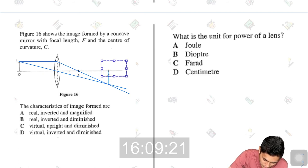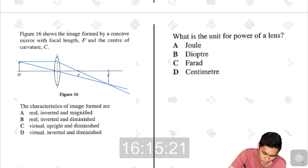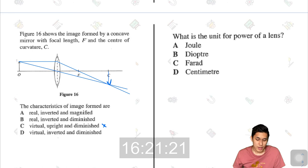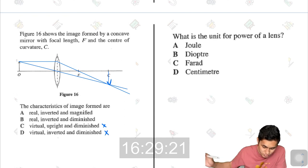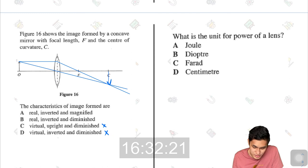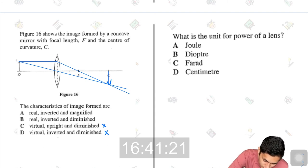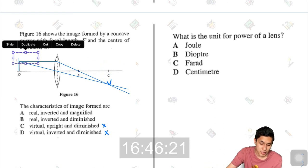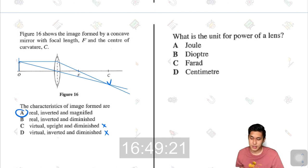That would be my image. I'm assuming that the question wants it to be at C. So this would be the image. It would be inverted, definitely. So C is wrong. It would definitely be real, because it is on the other side of the lens. So virtual is also wrong. And magnified or diminished? That is the real question. I would say magnified. I can't really tell from here. But if I bring this over, I would say it's a little bit bigger than our object. So yeah, I would say magnified. So the answer here would be A.